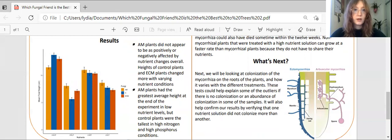AM plants were not negatively impacted as much by nutrient changes. Control plants and ECM plants changed more with varying nutrient conditions. The AM plants had the greatest average height at the end of the experiment in low nutrient levels, but the control plants were the tallest in high nutrient levels.